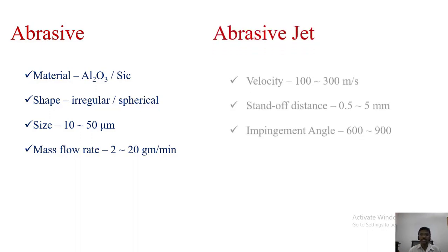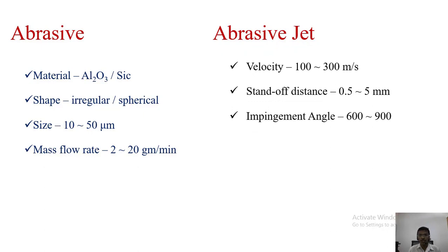For the abrasive jet, the velocity will be 100 to 300 meter per second. Stand-off distance between the work piece and the nozzle is 0.5 to 5 mm. The impingement angle is 60 degree to 90 degree.